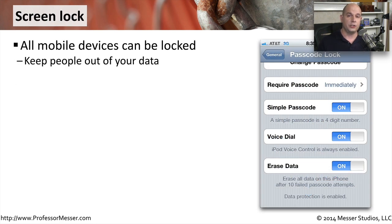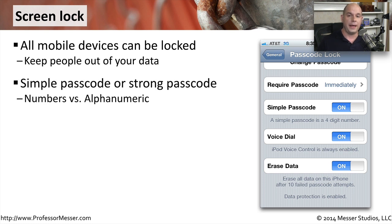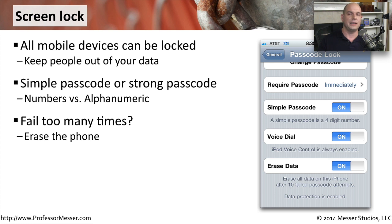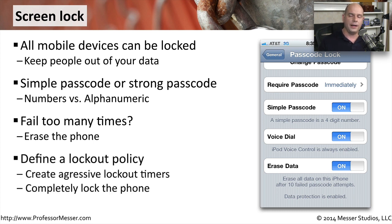All mobile devices these days have a screen lock functionality. When you're not using your phone, it automatically times out and goes into a locked mode, and you have to input the unlock key to gain access back. This can be something simple like a four-digit passcode, or you can create a very strong passcode that includes upper and lower case letters. You can also define what happens if someone tries over and over and still can't use the right lock code. On iOS, you can set it to erase all data on the iPhone after 10 failed password attempts, so after the 10th incorrect attempt, your entire phone will be wiped. Make sure you always have a good backup if you enable that functionality.